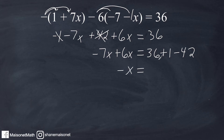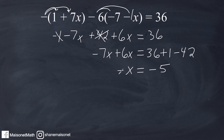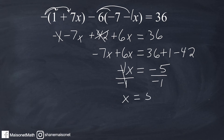Now we combine our x terms on the left and our constants on the right. Negative 7x and positive 6x is negative 1x, or just negative x. Over here we have 36 plus 1, which is 37, positive — and we combine that with negative 42, which gives a total of negative 5. Now we're not quite done yet. Our goal is to get x by itself, and it has to be positive x. So when you have just a negative x left, the coefficient is actually negative 1. We divide both sides by that coefficient of negative 1, which leaves us with x equal to positive 5, because negative 5 divided by negative 1 is positive 5.